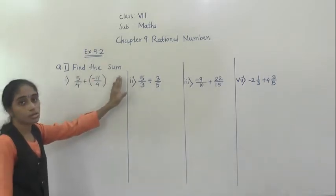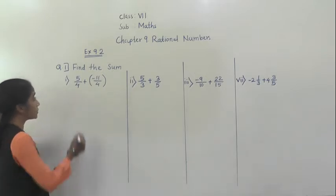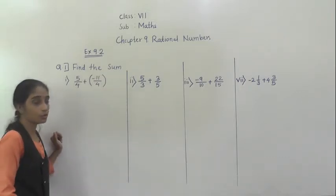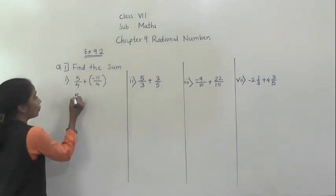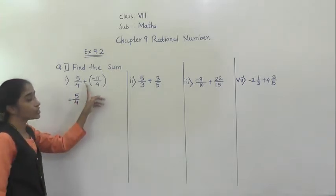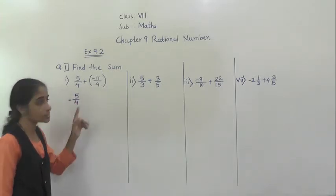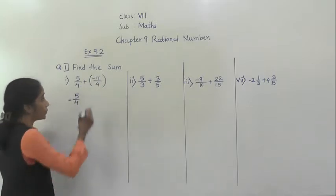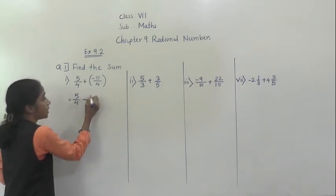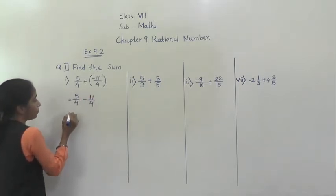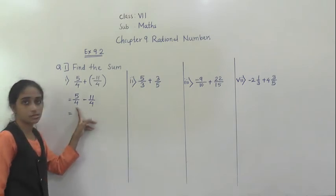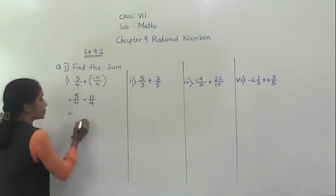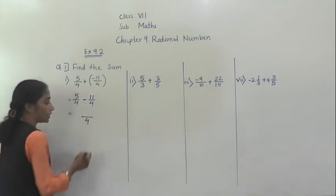Question number 1, find the sum. First example: 5 upon 4 plus into bracket minus 11 upon 4. So we will write 5 upon 4 here. Now first what we are going to do? We are going to open the bracket. This number is in the bracket, so plus minus gives minus 11 upon 4. Now if you observe, the denominators are same.